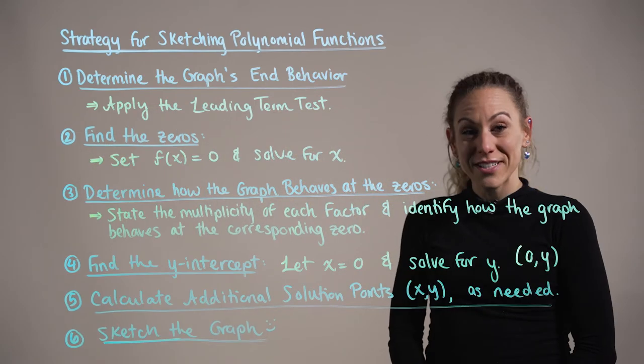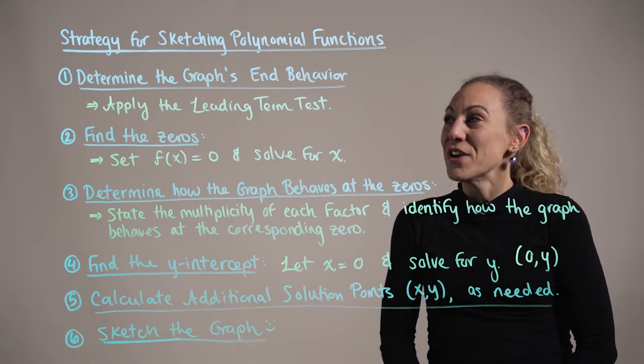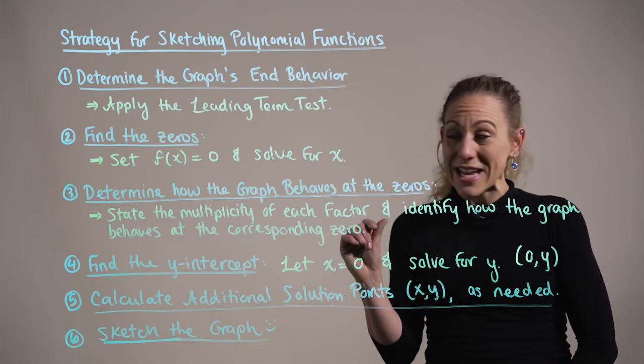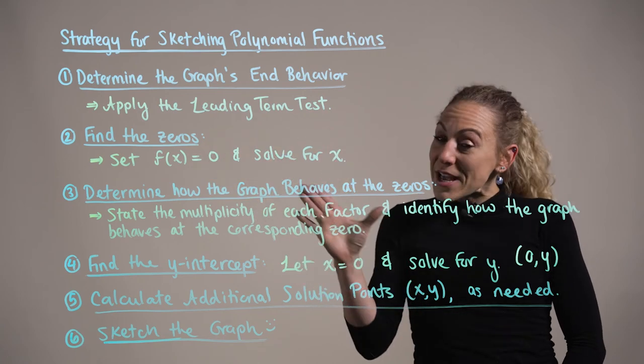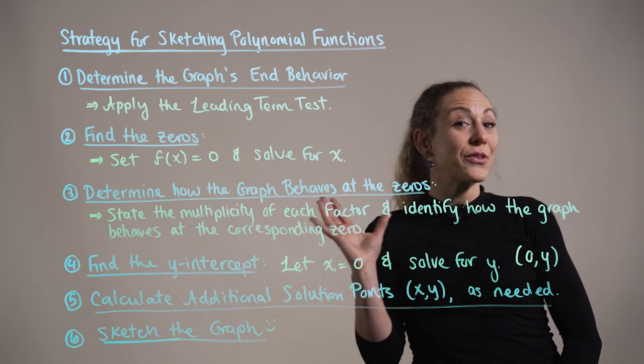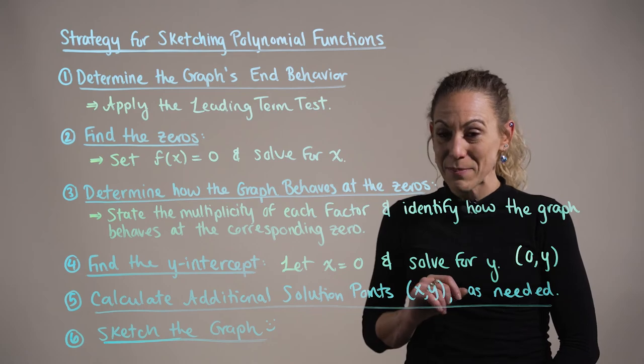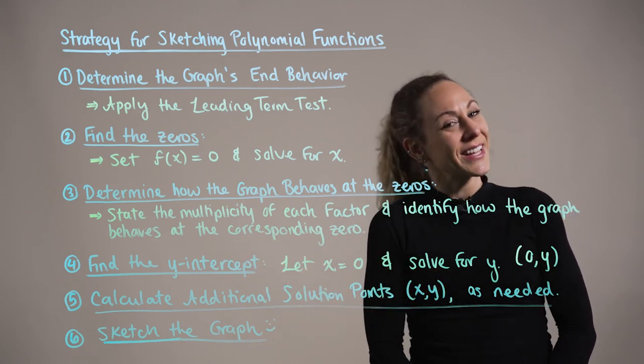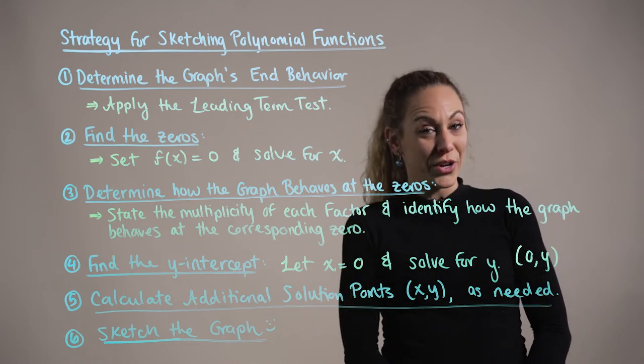And last but not least, we want to sketch the graph of the function. Begin by identifying the end behaviors on the coordinate plane. Plot your zeros and make note of the multiplicity and how the graph will behave at the x-intercept. Plot the y-intercept and additional solution points, connecting all these points with a smooth curve.